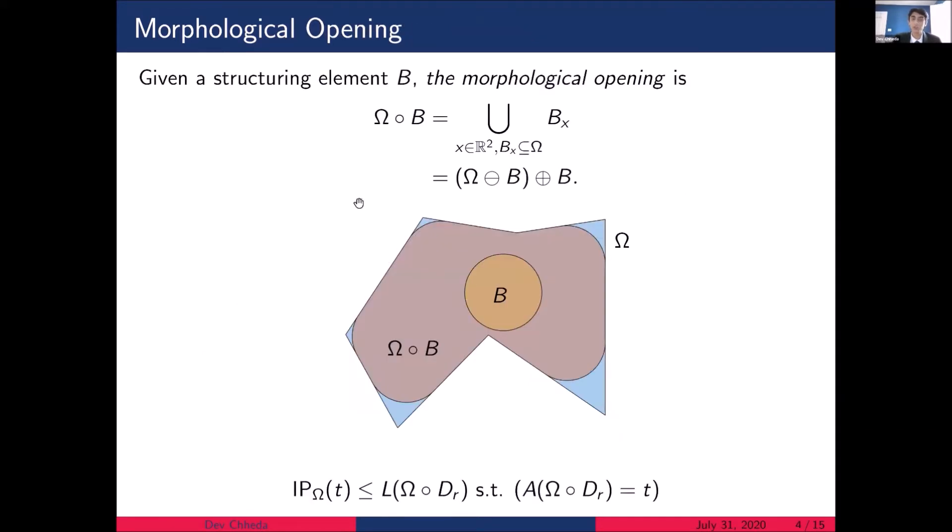Now the morphological opening is the composition of the erosion and the dilation. But a more intuitive way to think about it is, again, given our structuring element, which is a disk of some radius, we are going to move this disk around within our shape and all the points that it can touch are part of our morphological opening. The way this relates to the isoperimetric profile is that the profile is bounded from above by the perimeter and area of the morphological opening with respect to a disk of some radius for changing radius.